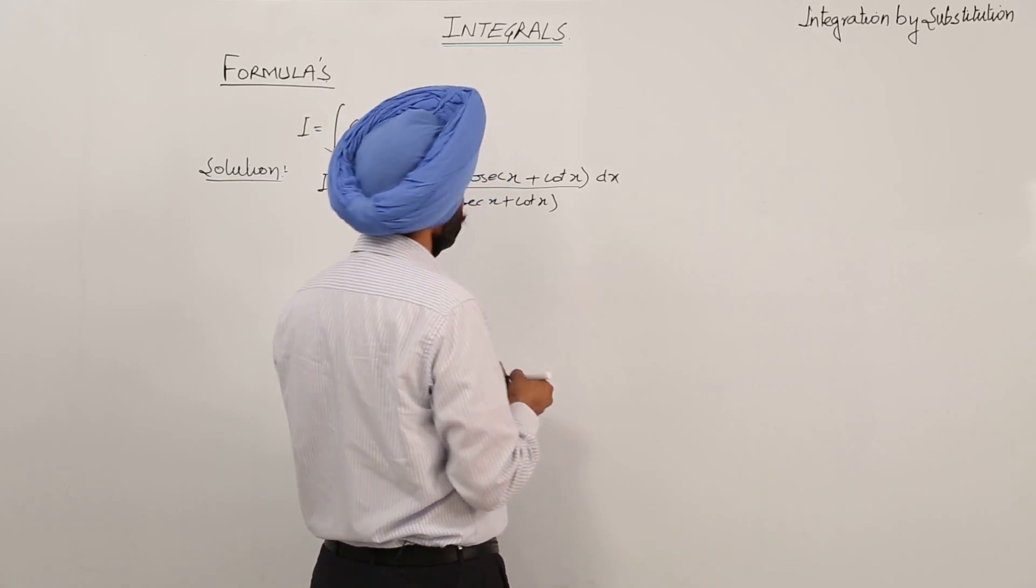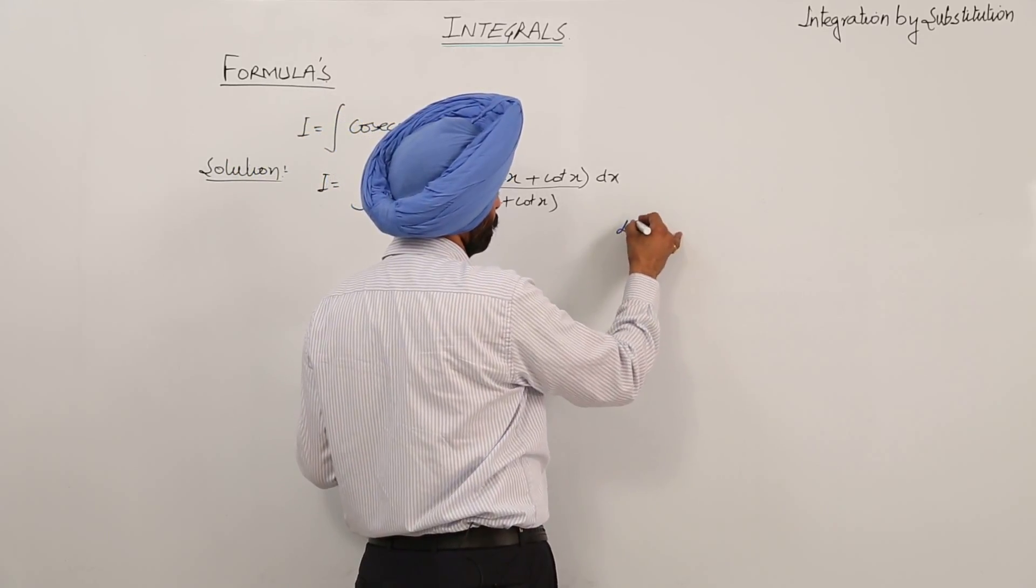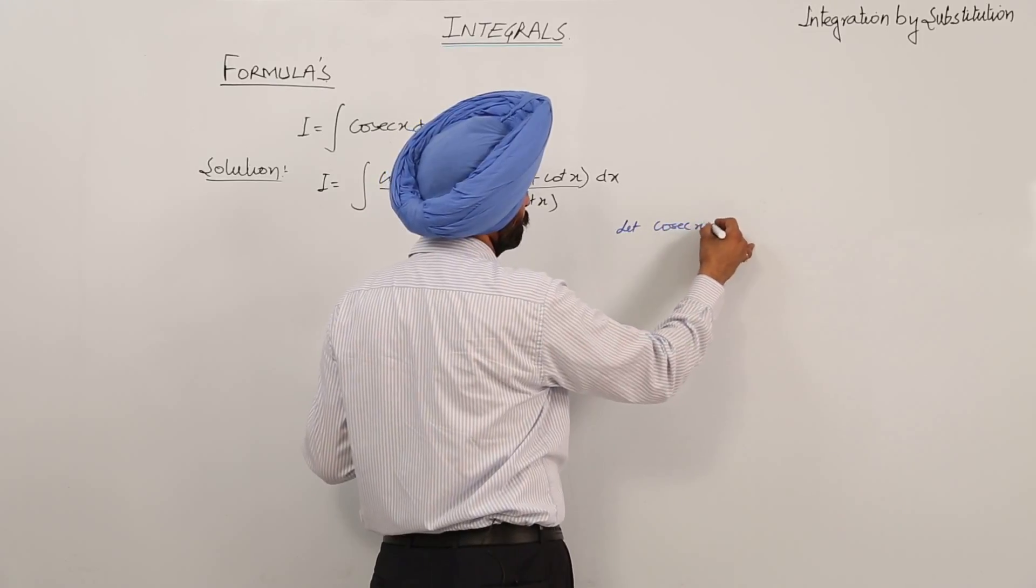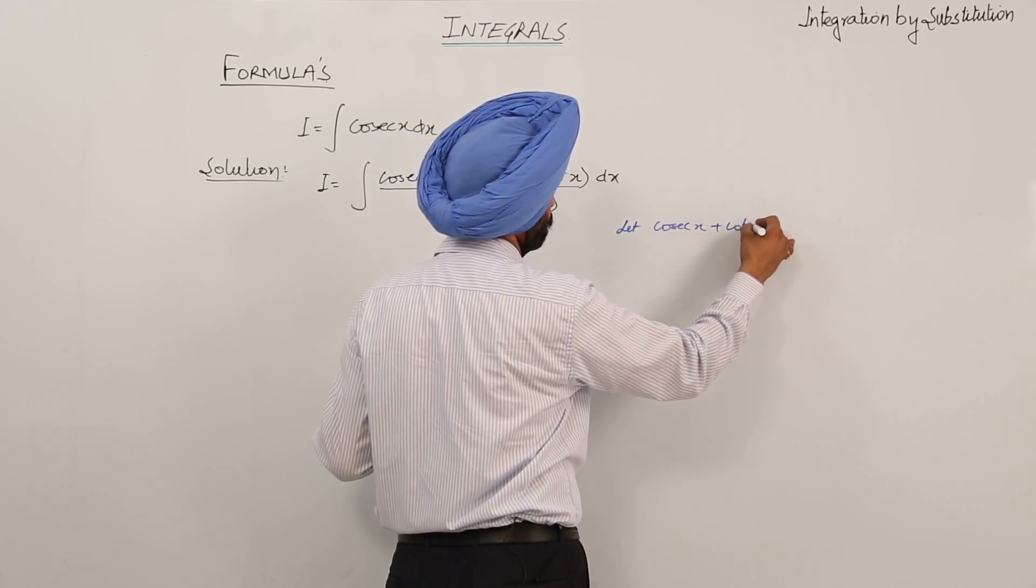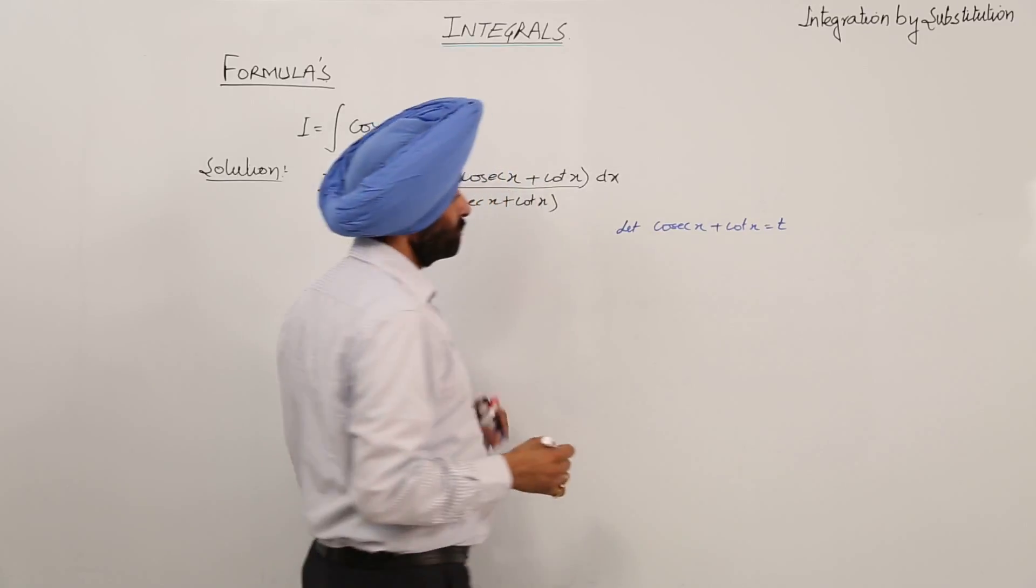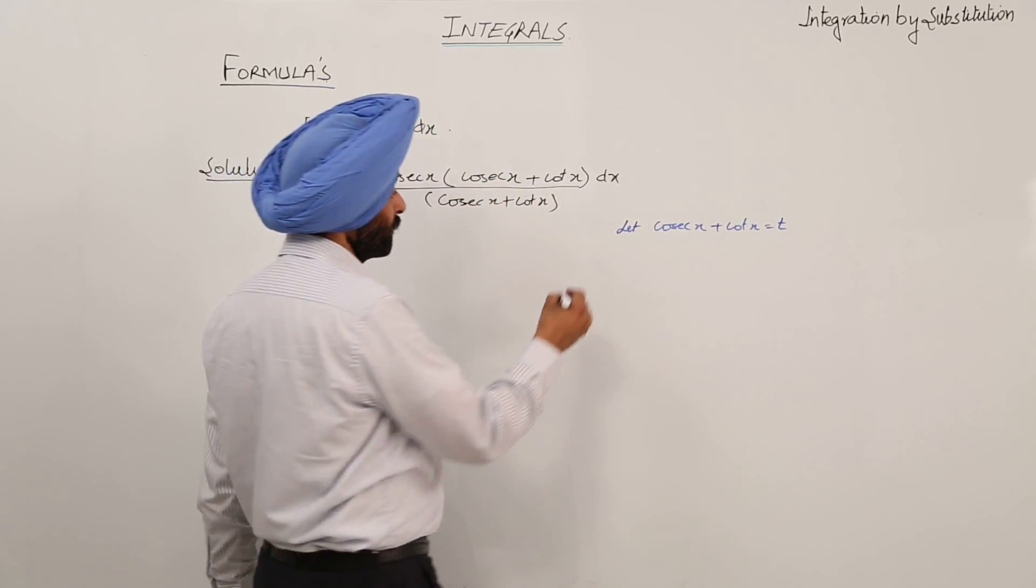Now putting, let cosecant x plus cot x equal t. Now differentiating with respect to x.